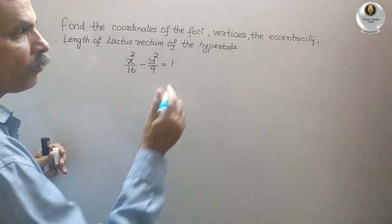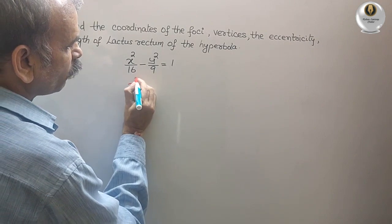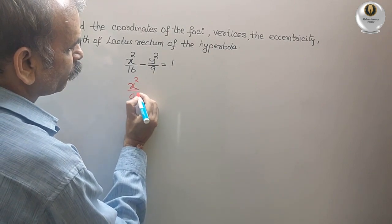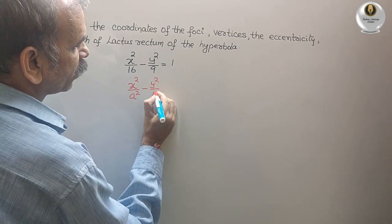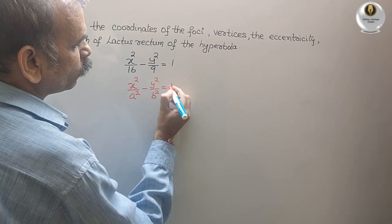So standard form of hyperbola is what, x square by a square minus y square by b square, that is equal to 1.